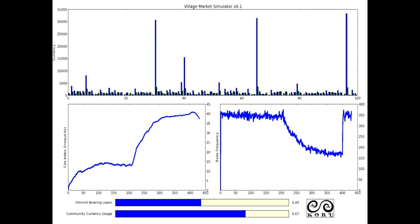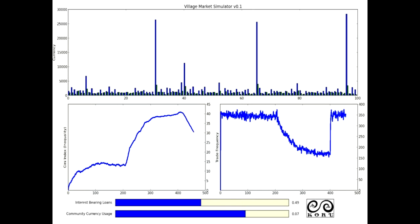Using that community currency, now instead of going into debt when they need to trade something, they can use this as sort of a barter exchange. Immediately you can see the trade starting to jump back up on the right. On the left you can see the inequality dropping quite a bit. That's because now people are less and less enticed into interest-bearing loans.